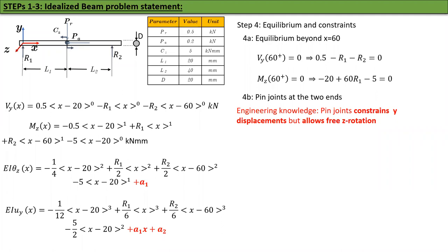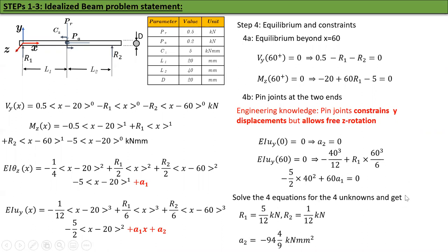Pin joints at the two ends. This is where your engineering knowledge comes in. Pin joints constrain the Y displacements but allow for free Z rotation. That means MZ is 0 at X equal to 0 but UI is 0. So I got EI UI at 0 equal to 0, immediately A2 equal to 0. And EI UI at 60 equal to 0. I got four equations, four unknowns. You can solve it.